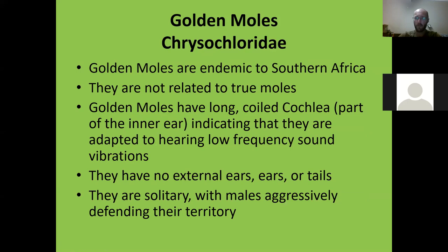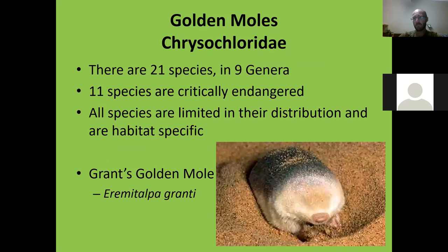There are 21 species in nine genera, and 11 species are critically endangered, bordering on extinct. Most of that is due to urbanization — a lot of the areas these animals occur in have now been taken over by people.